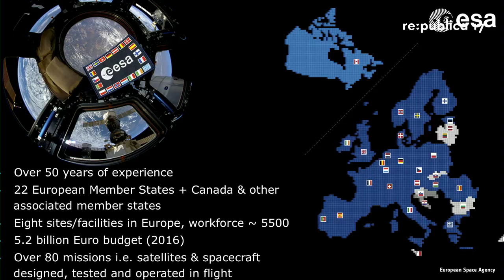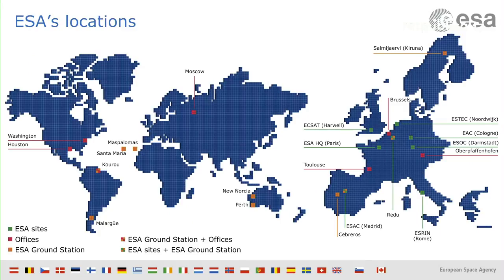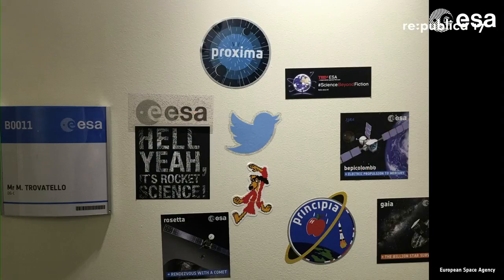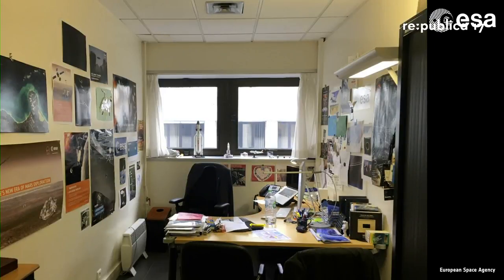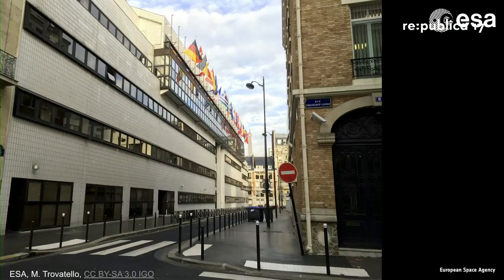ESA has a budget of 5.2 billion euros per year approximately, and so far has implemented over 80 missions. Here you can see a brief overview of ESA locations. I work at headquarters in Paris — this is my office door, and when it's open it's nothing more, nothing less than a messy office in Paris, where I do this job called cross-media coordination, and I also take care of the implementation of open access at ESA.